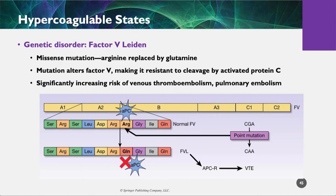There are numerous hypercoagulable states. One that you'll hear of pretty commonly is factor V Leiden. This is a genetic abnormality where there's a missense mutation where the genetic code miscodes the proteins, resulting in factor V Leiden. This increases the risk of venous thromboembolism. And if you throw in additional problems — a woman who smokes, for instance — that can really put you at the higher end. And then you throw in oral birth control, now you're really in trouble.